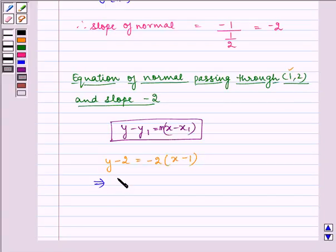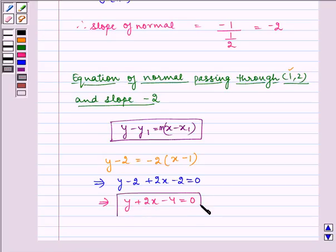Which implies y minus 2 plus 2x minus 2 is equal to 0, which implies y plus 2x minus 4 is equal to 0, which is the required answer.